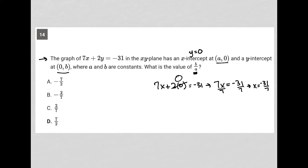So there's my a value. The x-intercept is at (a, 0), so a is equal to negative 31 over 7.